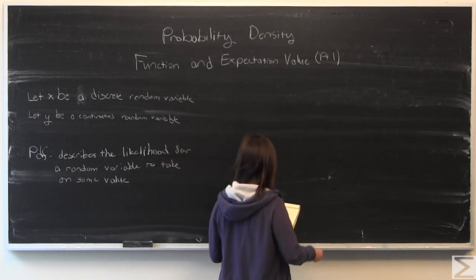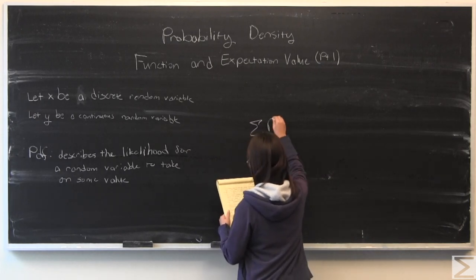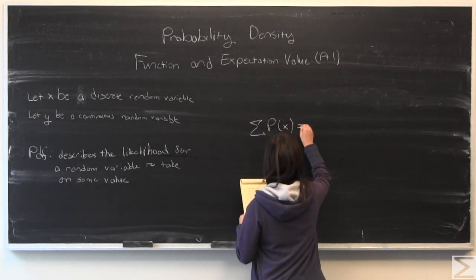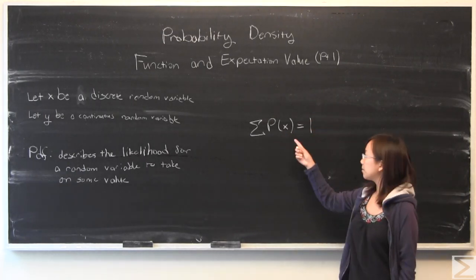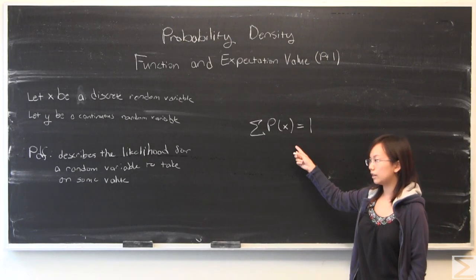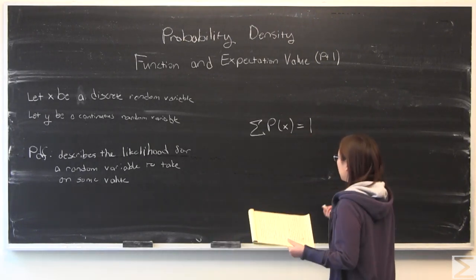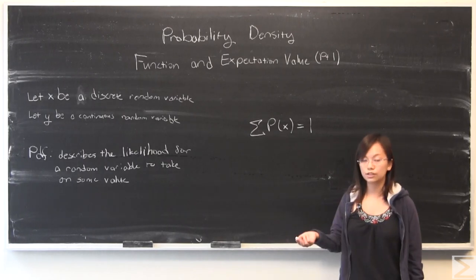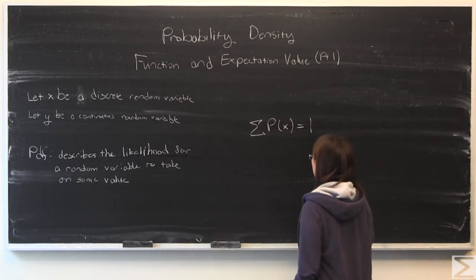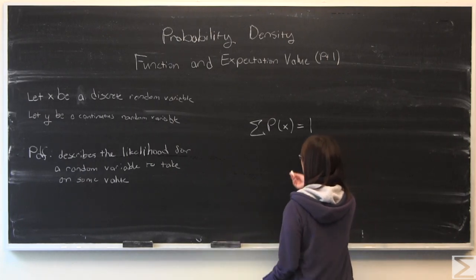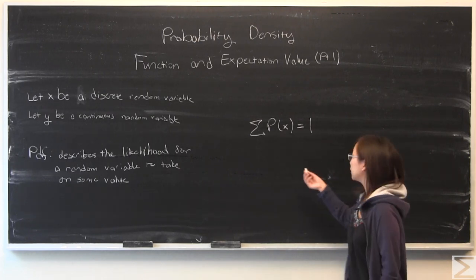There are two very important properties of the probability distribution function. One is that it is normalized. So for the discrete case, if you add up all the probabilities, it needs to have a total of one. So the dice, each value has a one-sixth chance. If you add up all those one-sixths six times, because there are six different values that the random variable can take, one-sixth six times is one.